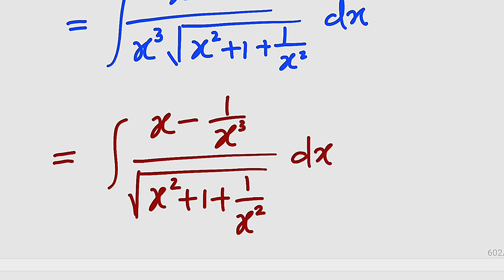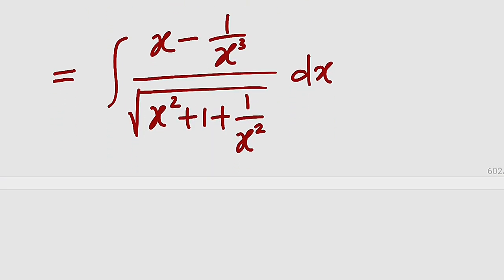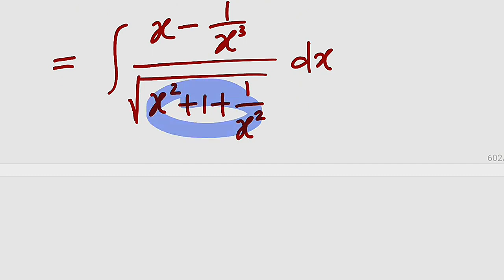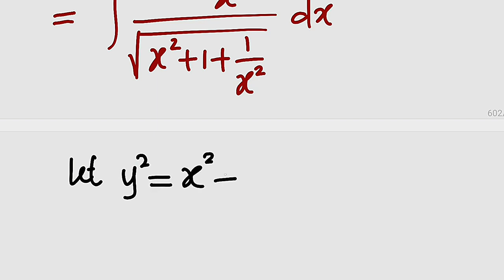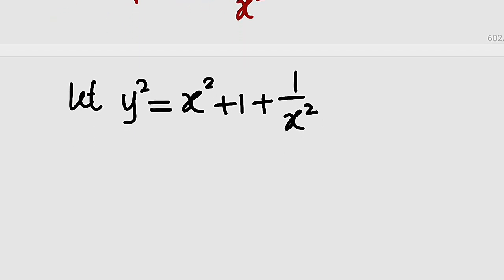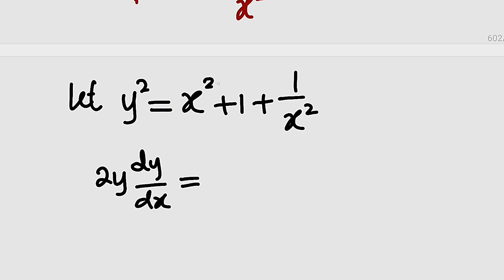Next, I would like to do a substitution by letting a variable represent our radical. So I would like to let y squared equal to this, because substituting back the power of 2 will eliminate the square root. So let y squared equal to x squared plus 1 plus 1 divided by x squared. Let us differentiate both sides. If you differentiate y squared you obtain 2y multiplied by dy over dx.